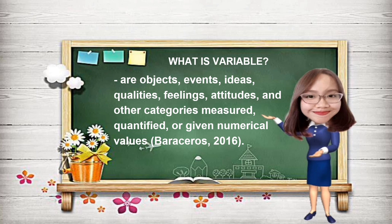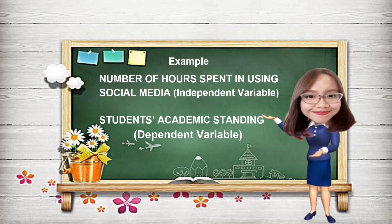Basically, variables are of two kinds: independent variables and dependent variables. Independent variables are those that cause change in the subject — an example is the number of hours spent in using social media. While dependent variables are those that bear or manifest the effects caused by the independent variables — an example is students' academic standing. This means that the number of hours a student spent using social media can affect their academic standing.